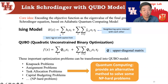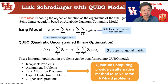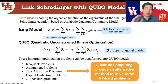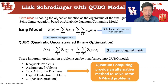For QUBO, the core idea proposed by D-Wave is to encode the objective function as the eigenvector of the final ground state of the Schrödinger equation. Using the Ising model — where a spin is influenced by its own field and neighboring spins — we map the Ising Hamiltonian H to a quadratic unconstrained binary optimization: minimize sum of Q_{ij} * x_i * x_j, where x_i is binary (+1 or -1). This fits many applications like clique problems, assignment, and task allocation.